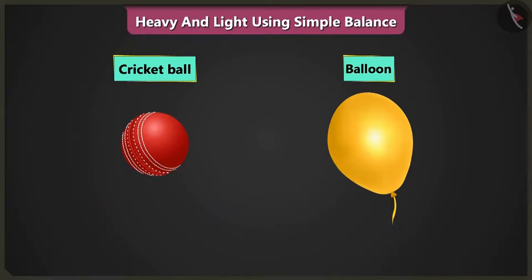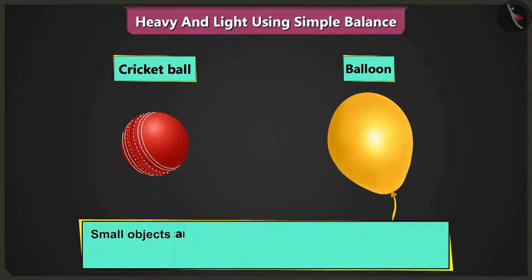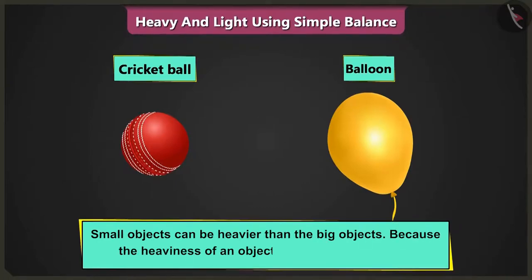Now do you understand? Even small objects can be heavier than the big objects because the heaviness of an object depends on its weight.